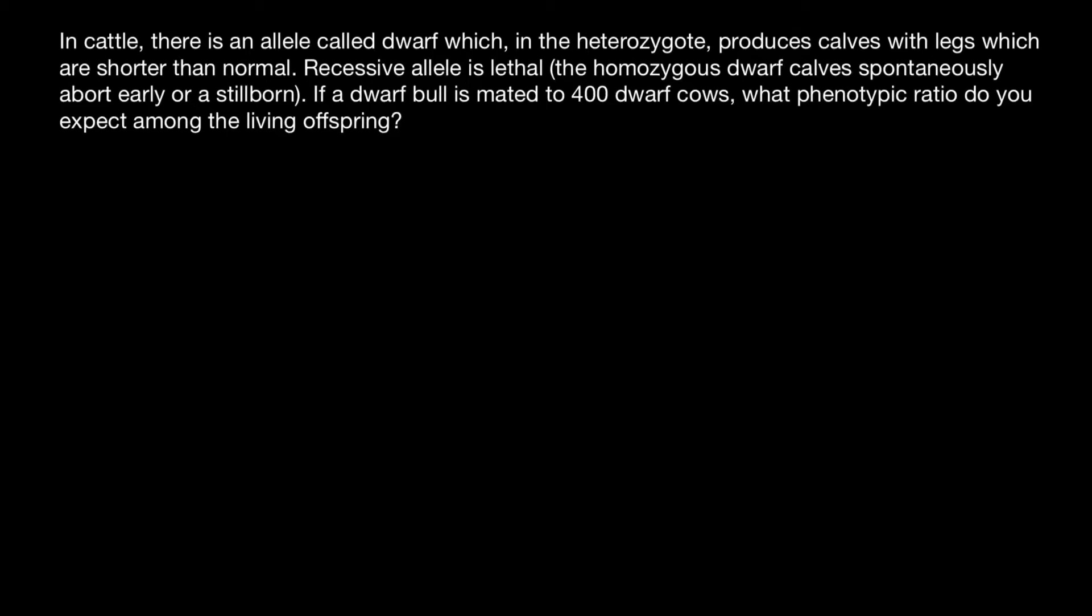Hello and welcome to Nikolai's genetics lessons. Today's problem: In cattle, there is an allele called dwarf which, in the heterozygote, produces calves with legs which are shorter than normal. The recessive allele is lethal - homozygous dwarf calves spontaneously abort early or are stillborn. If a dwarf bull is mated to 400 dwarf cows, what phenotypic ratio do you expect among the living offspring?